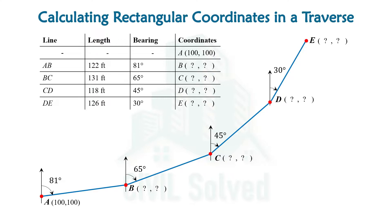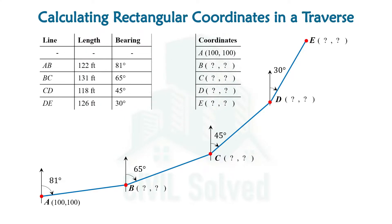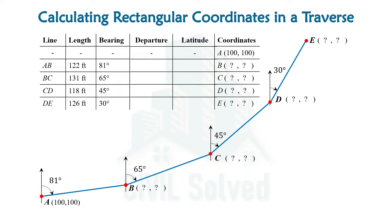The coordinates of the respective points can be calculated if we can calculate the departure and latitude of each line. The departure is calculated by the formula L sin θ, and latitude is calculated by the formula L cos θ, where L is the length of the line and θ is the bearing in the whole circle bearing system.